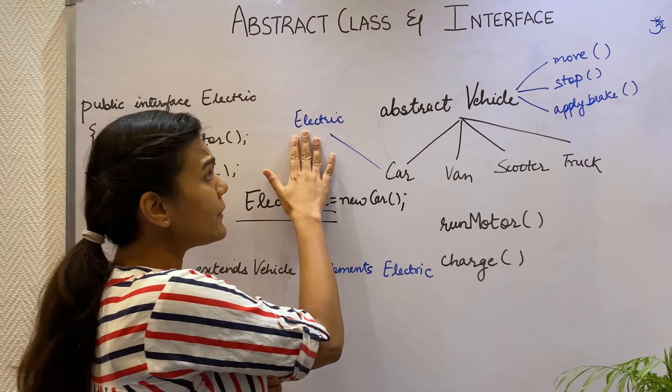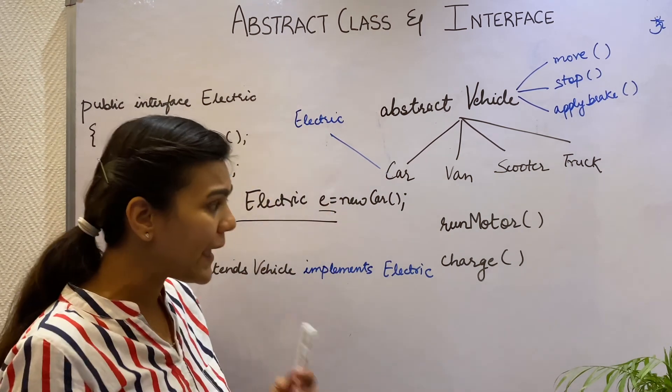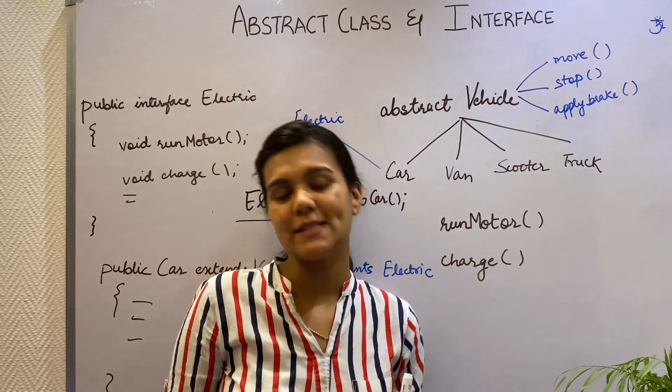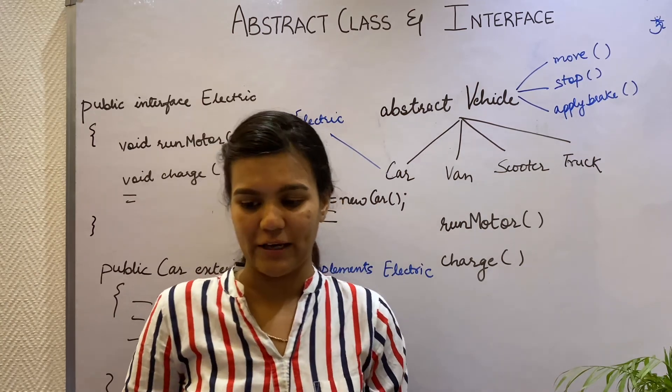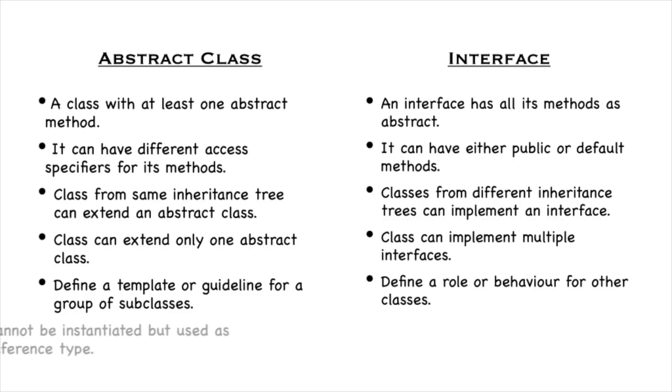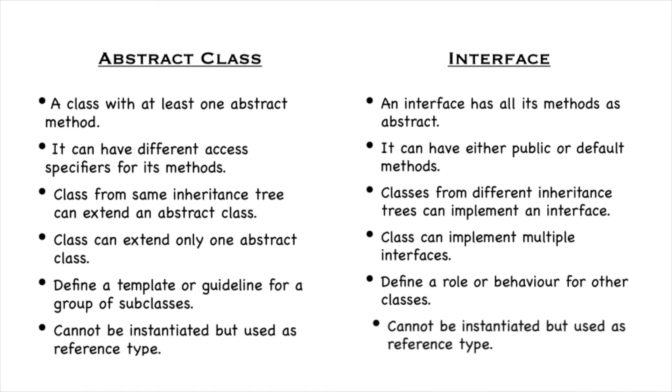But an interface defines a rule or a behavior for our classes. So here, my Electric interface defines a behavior like run motor and charge for all the classes that's going to implement the Electric interface. Both the abstract class and interfaces cannot be instantiated but still can have reference types.